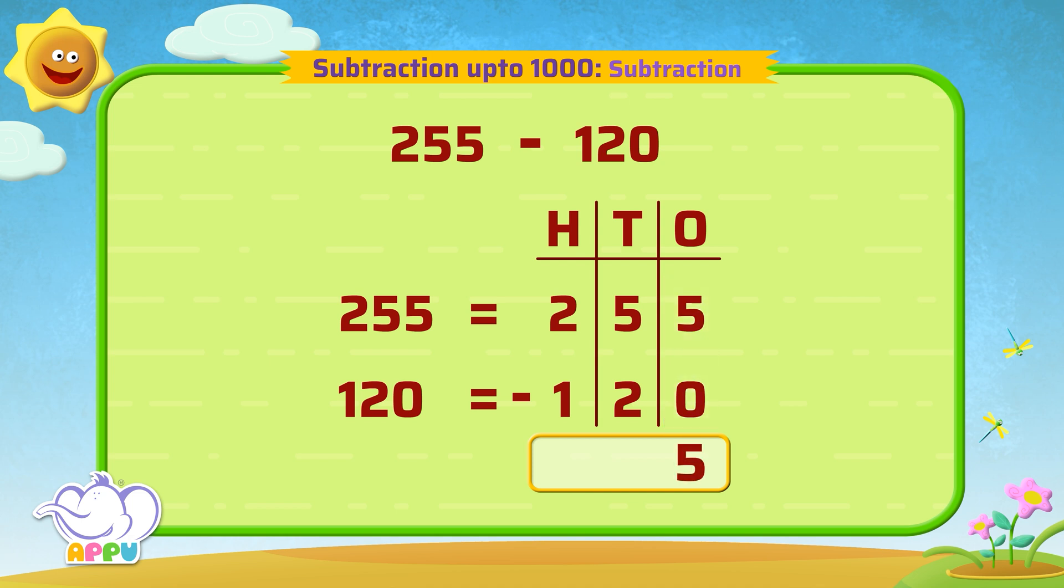Then we subtract the tens. Five minus two equals three.